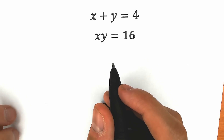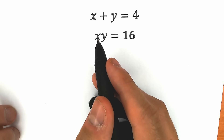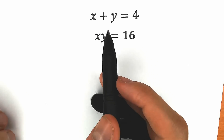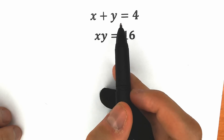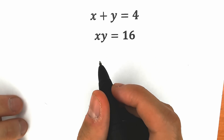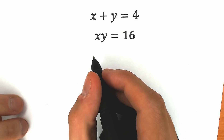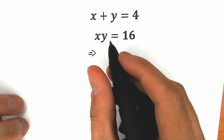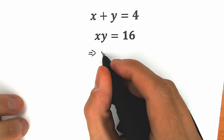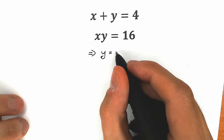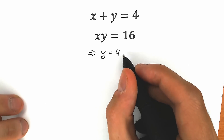So it will be really interesting. This is a basic algebra question. Right now let's express y from the first equation. So from the first equation, y equal to 4 minus x.